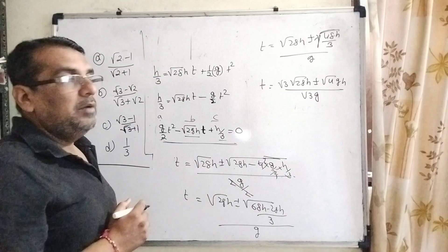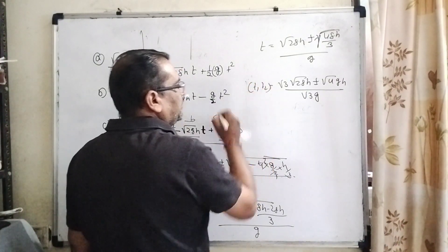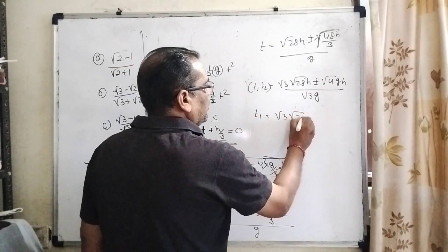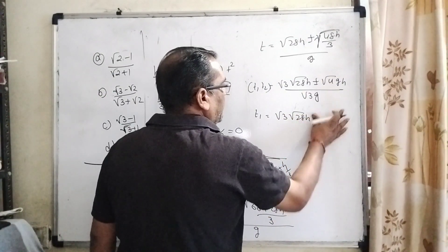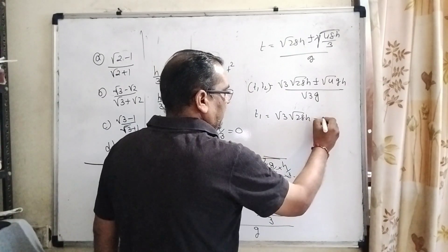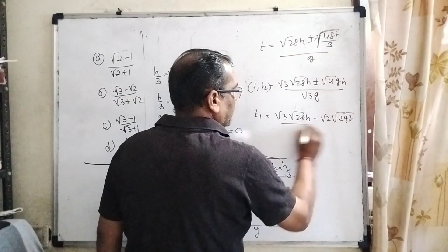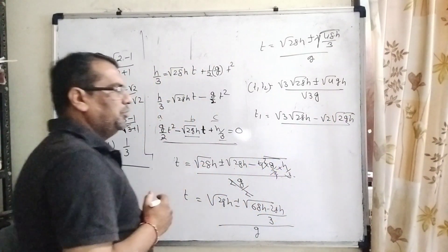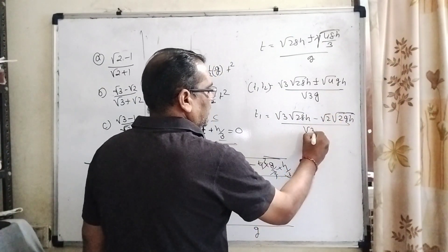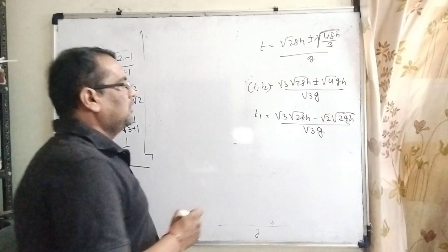So t1 = [√(2gh) - 2√(gh/3)] / g. We can factor out √(2gh) to get t1 = √(2gh)[√3 - √2] / (√3·g).